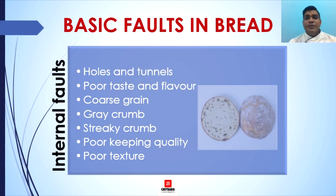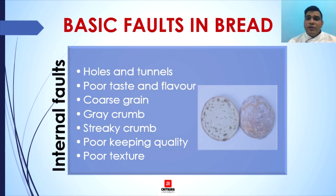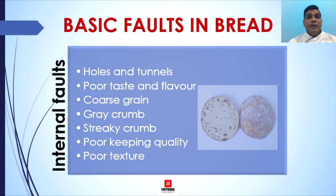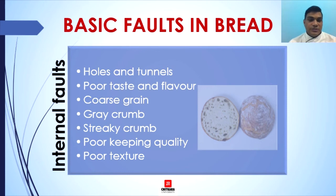Next is poor taste and flavor, caused by poor quality of raw materials or flour, too much or too little salt, too low sugar, too much yeast, over-fermented or under-fermented dough, and dough temperature too high or too low. Coarse grain — meaning the texture of the crumb is improper — results from too much yeast, too much liquid, uneven or under-mixing of raw materials, improper fermentation, and over-proofed dough.